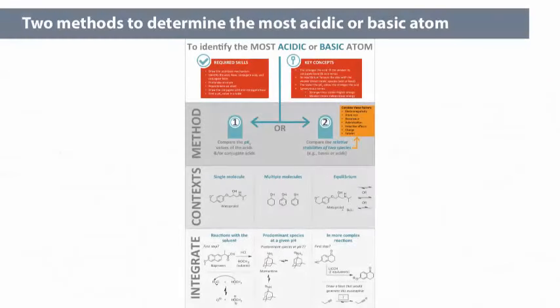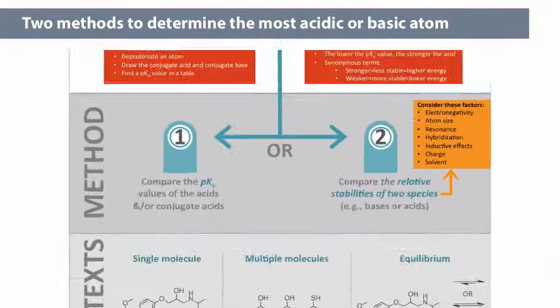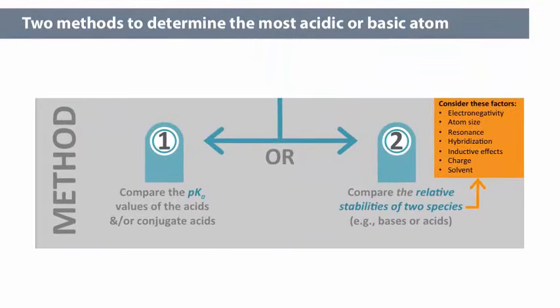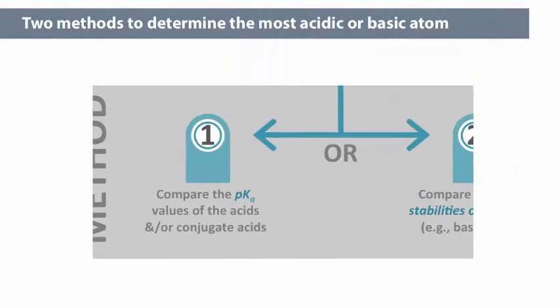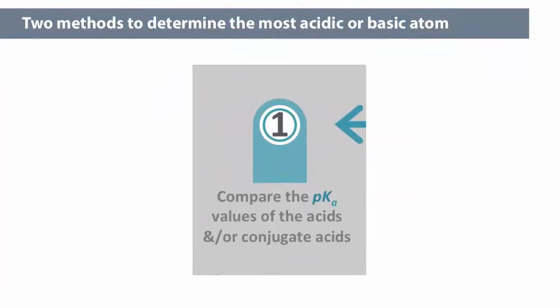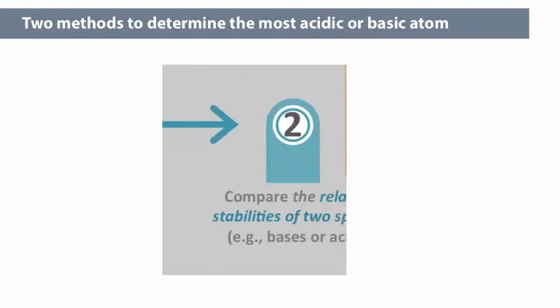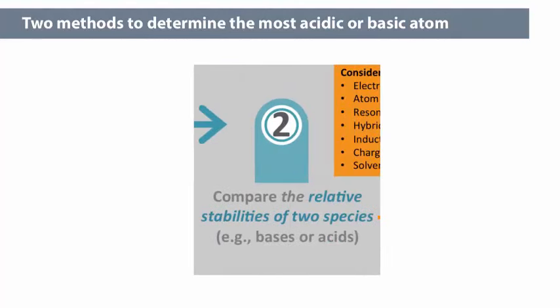To identify the most acidic or basic atom in a molecule, we can use one of two methods. In method 1, we compare the pKa values of the acidic protons. In method 2, we compare the relative stability of the species, either the acids or bases, although usually bases, to determine the most stable.